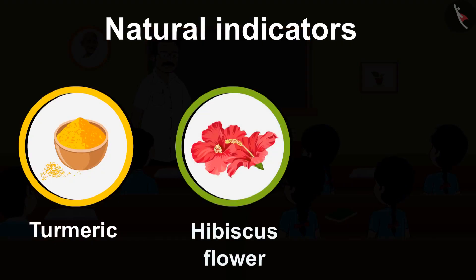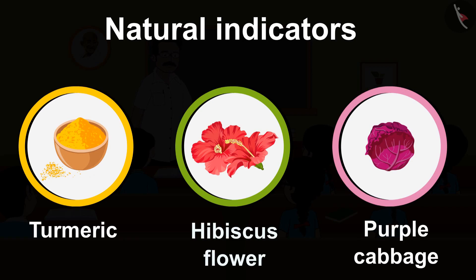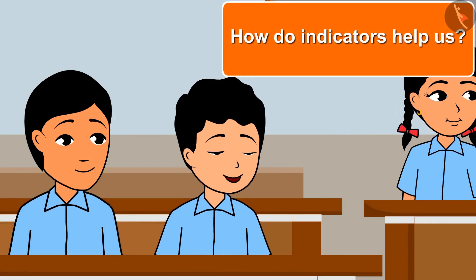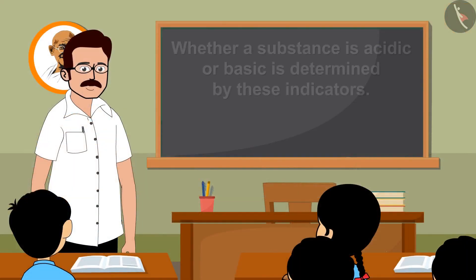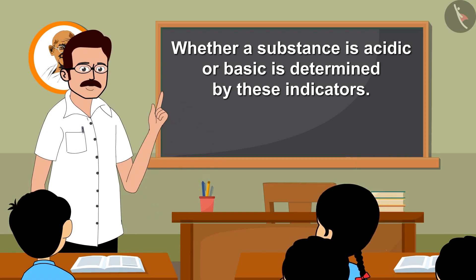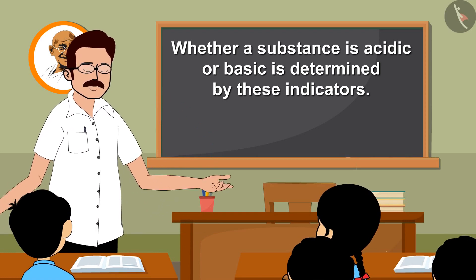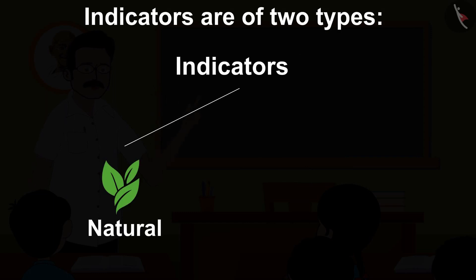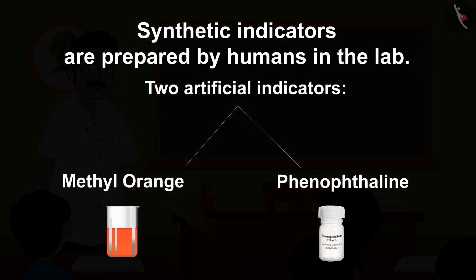Turmeric, hibiscus flower, purple cabbage are a few of the natural indicators. Is it? How do indicators help us? Whether a substance is acidic or basic is determined by these indicators. Indicators are of two types, natural and synthetic. Synthetic indicators are prepared by humans in the lab.